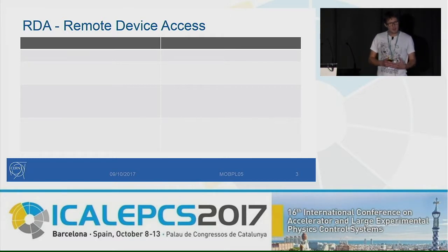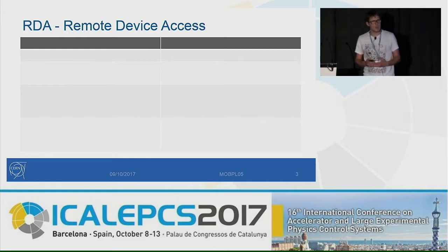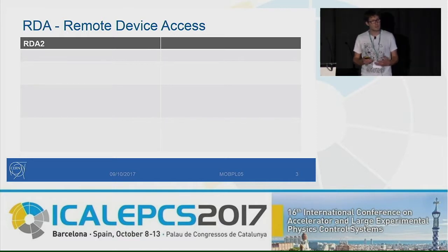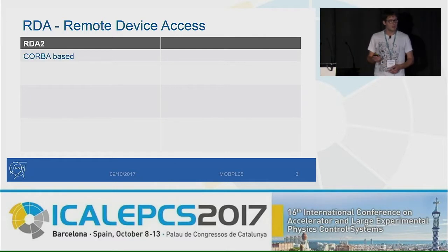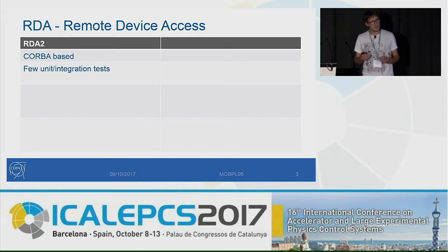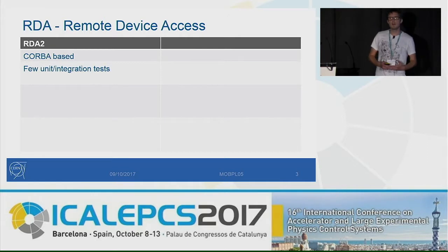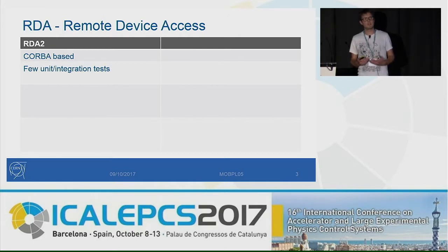At CERN, the main library we use to exchange information with equipment within the accelerator complex is called RDA, which stands for Remote Device Access. The old version of this library is called RDA2, and it was based on CORBA. One problem was, from the beginning, it had few unit and integration tests. It was written in 2000 with no testing in mind. Over the years, we accumulated many patches, many fixes, but we never really refactored the code.